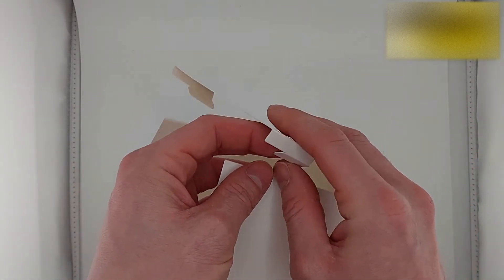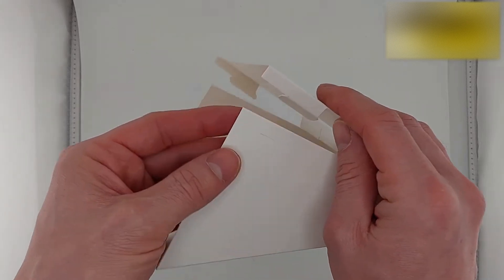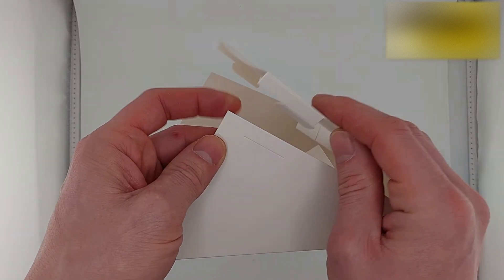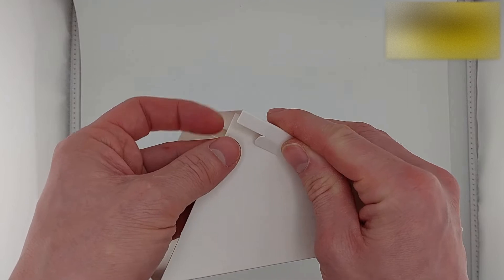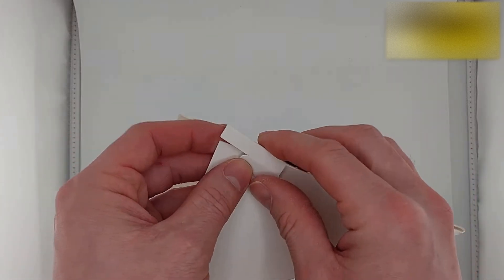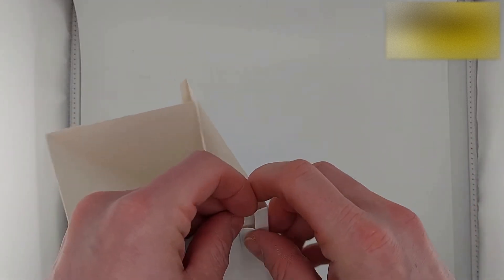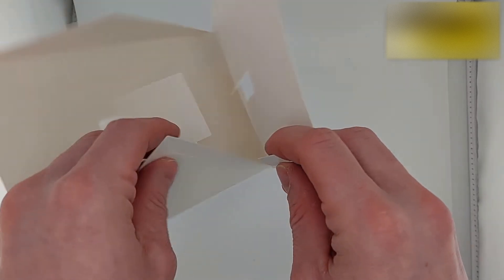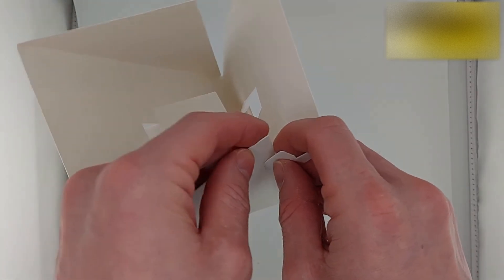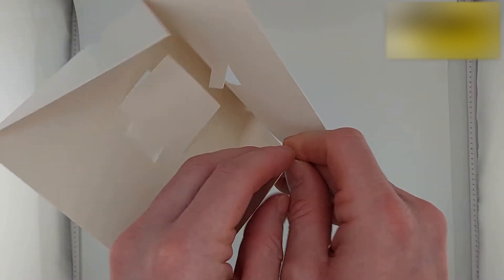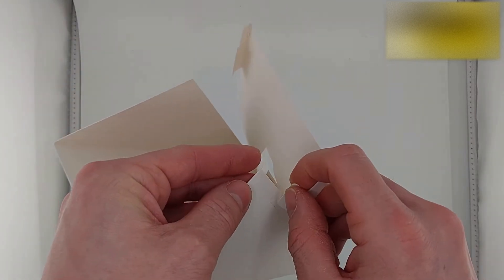So what we need to do first is we need to get our tabs here and you'll actually see that there's a slot here for the tabs to go into. This just keeps it secure. So let's get these in first. It's a little bit hard to do when the card's not directly in front of me, but let's try and get around that.